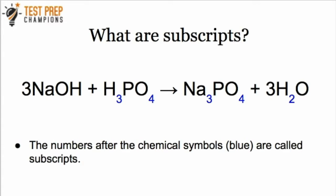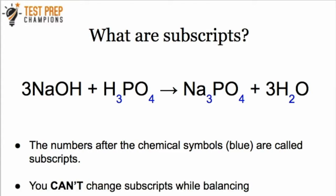In addition to coefficients, you also need to know about subscripts. Knowing the difference between a coefficient and a subscript is very important. The numbers shown in blue come after the chemical symbol — we call those subscripts. Subscripts tell us how many atoms of an element are in a molecule. This is really important for balancing: you can't change the subscripts while balancing. You can change the coefficients, but not the subscripts.